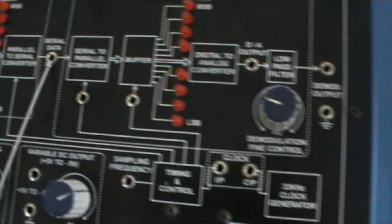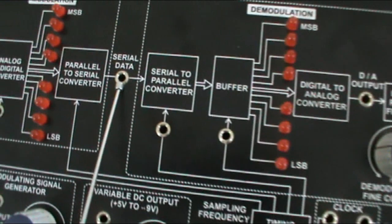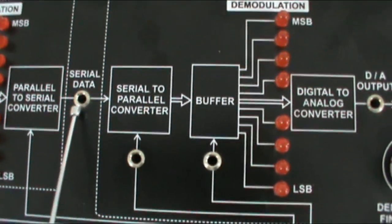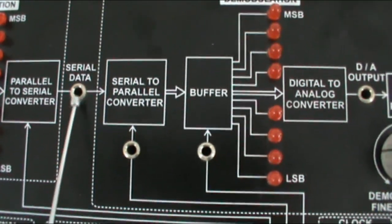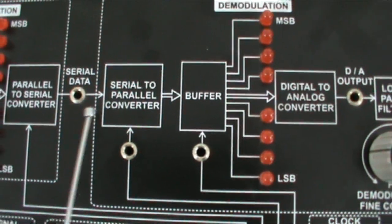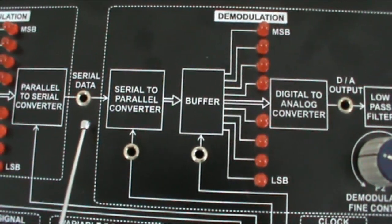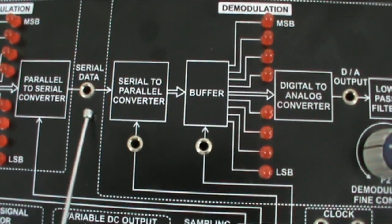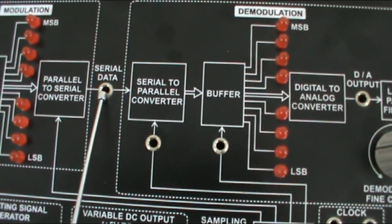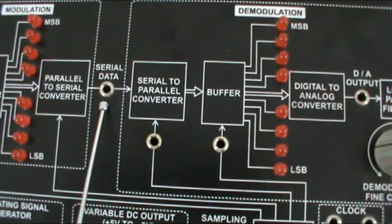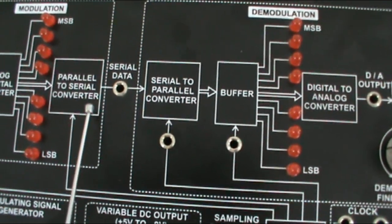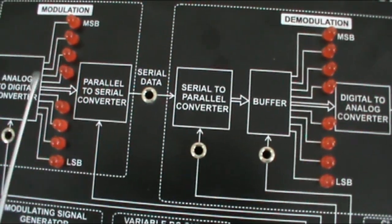This is the terminal for observation of serial data. You can connect the CRO at this terminal and observe the serial data which is received from the modulation section.